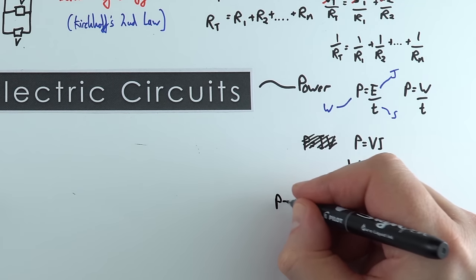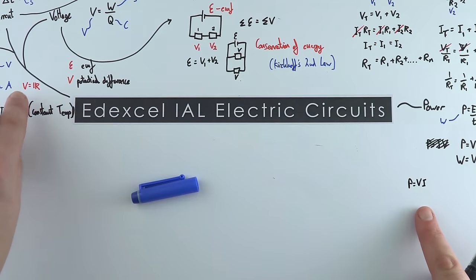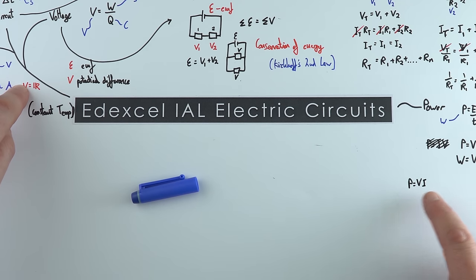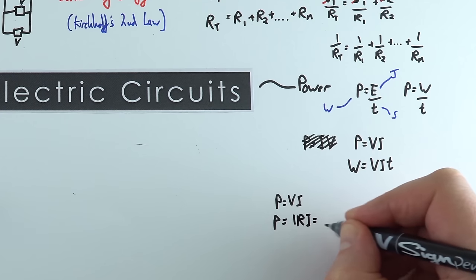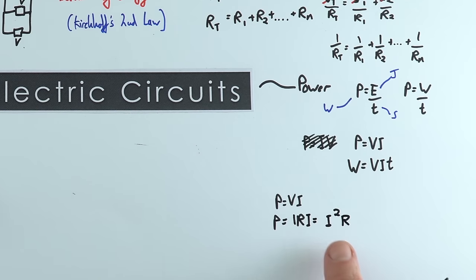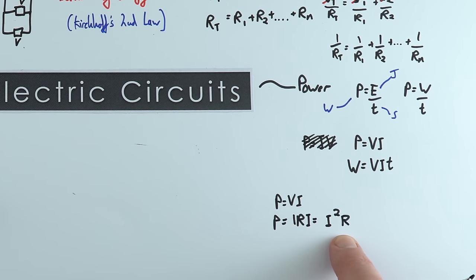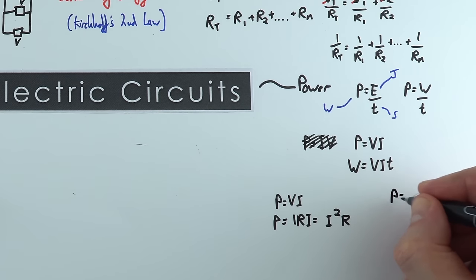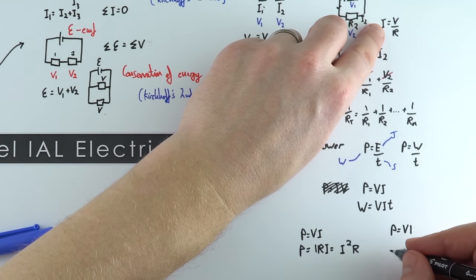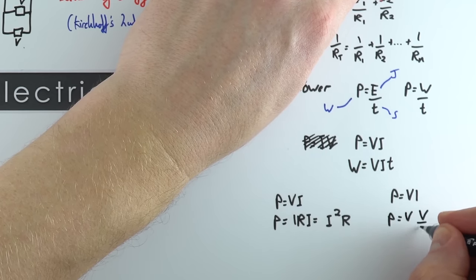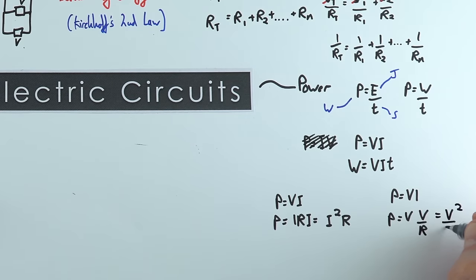Starting with P equals VI and substituting V equals IR, we can also write P equals I²R. So if you know the current and resistance you can find the power without knowing the potential difference. Alternatively, substituting I equals V/R into P equals VI gives P equals V²/R. So if you know the potential difference and resistance you can calculate the power without needing to know the current.